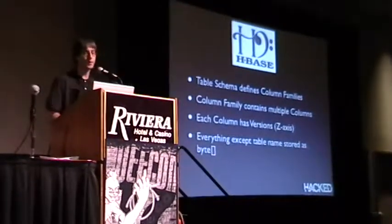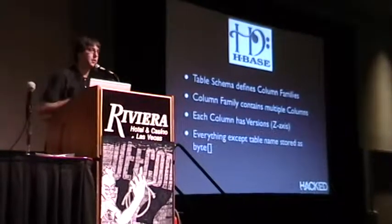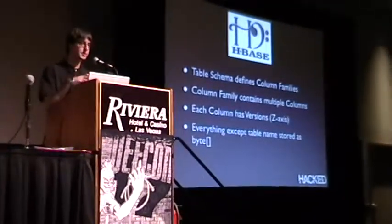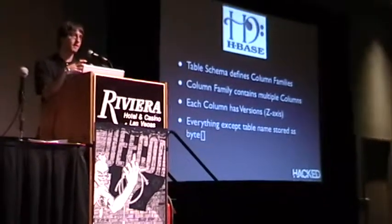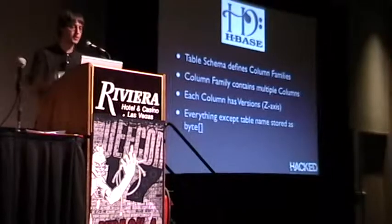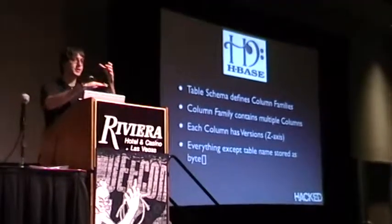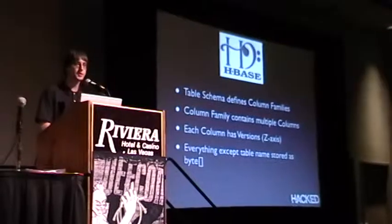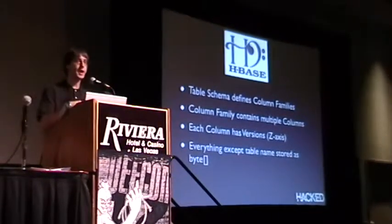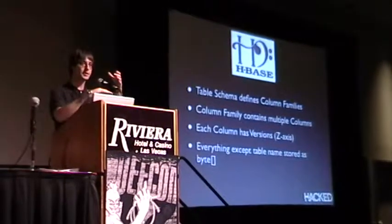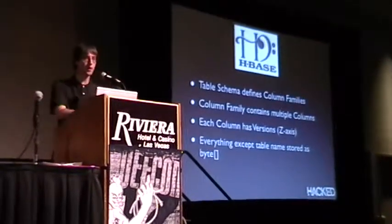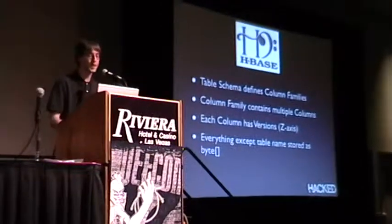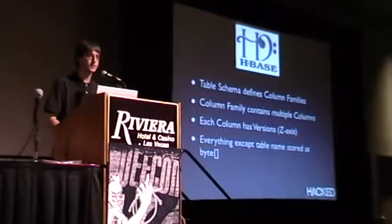The table schema defines your column families. HBase is like a database of a bunch of other databases. You have a row key and a column family, and inside that cell of the column family you have more columns. Coming down on the Z-axis you have versions with timestamps. For example, when Google scrapes a web page and dumps it into their search engine, they grab it today, and when they scrape it again tomorrow, they drop it down on the Z-axis to the next version — so they can see changes over time. Everything in the table except the table name is stored as binary, which works with HDFS for efficiency.